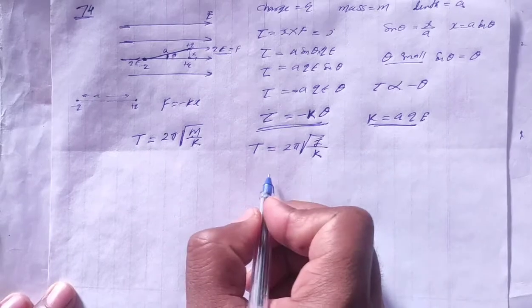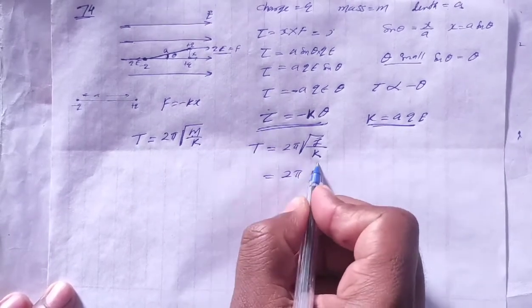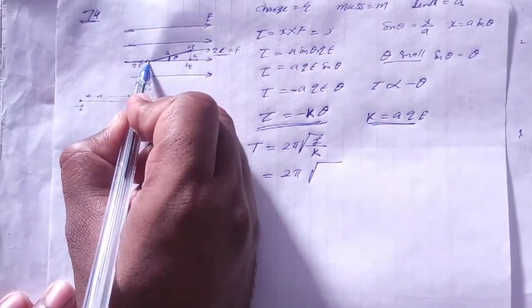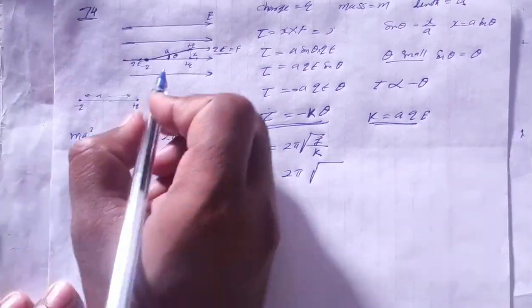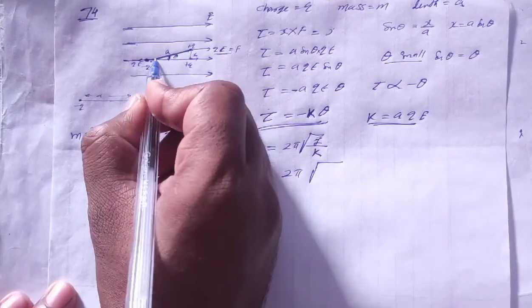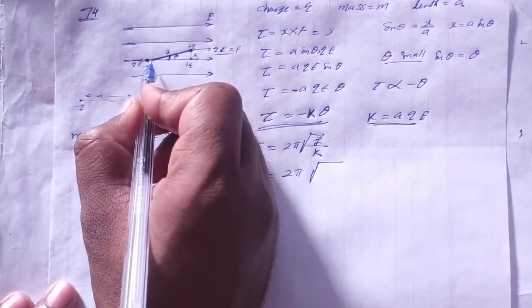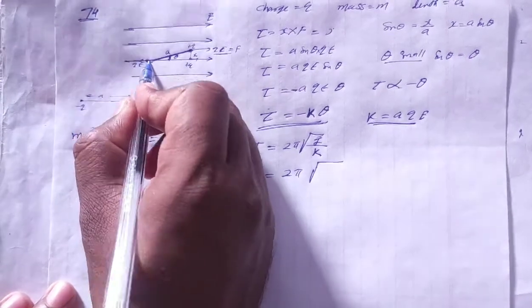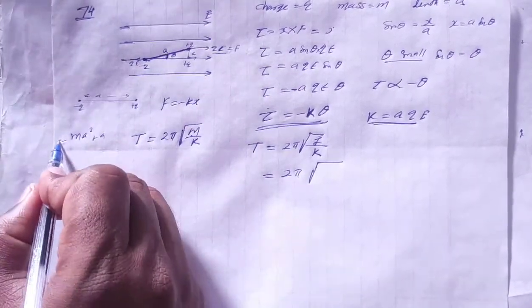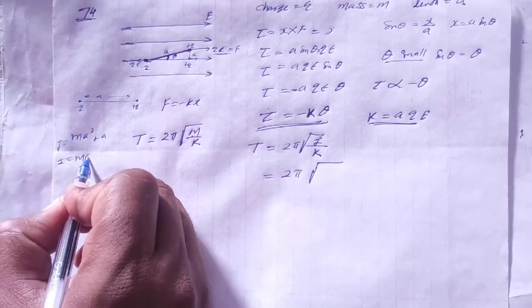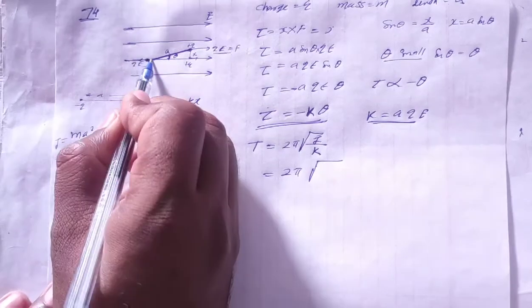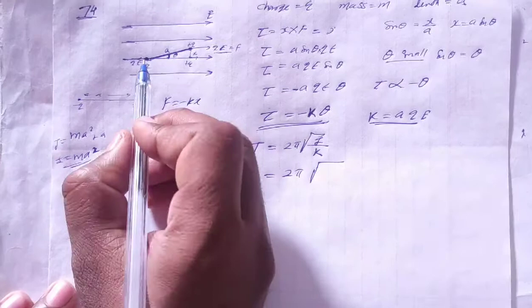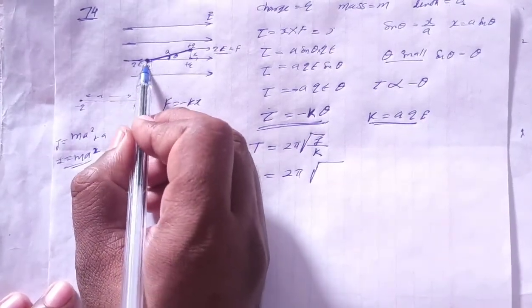So the time period is 2π√(I/k). Now we calculate the moment of inertia about the clamped point. The plus q charge is at distance a from the clamped end, and its mass is m, so its moment of inertia is ma². The minus q charge lies on the same axis as the pivot, so its moment of inertia is 0. Therefore, the total moment of inertia I = ma².